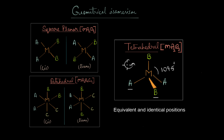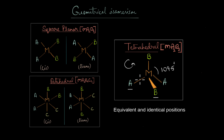All positions of the ligands are equivalent, meaning no matter how you rotate or reposition them, you end up with the same structure. As a result, we cannot create distinct arrangements like cis and trans isomers in tetrahedral geometry. Square planar and octahedral geometries are also symmetrical, but they do allow for distinct unique isomers like cis and trans. In tetrahedral geometry, the arrangements are not distinct from one another, so it fails to exhibit geometrical isomerism.